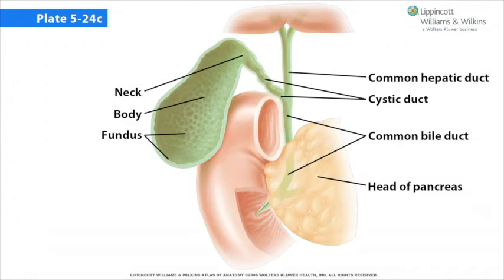The liver and gallbladder work in concert with the pancreas to deliver bile and digestive enzymes to the duodenum.